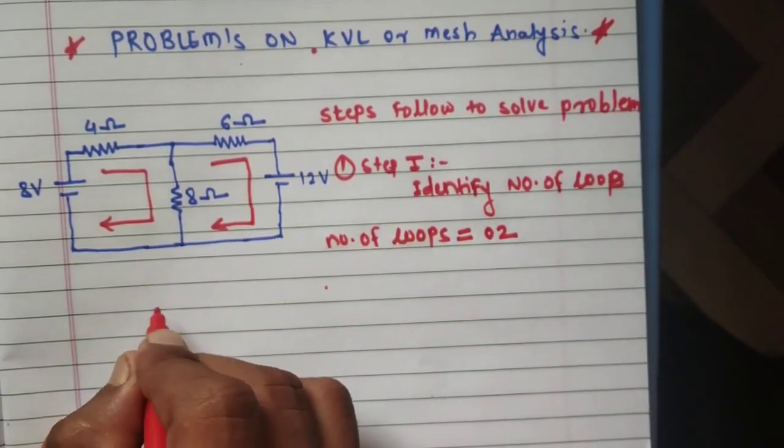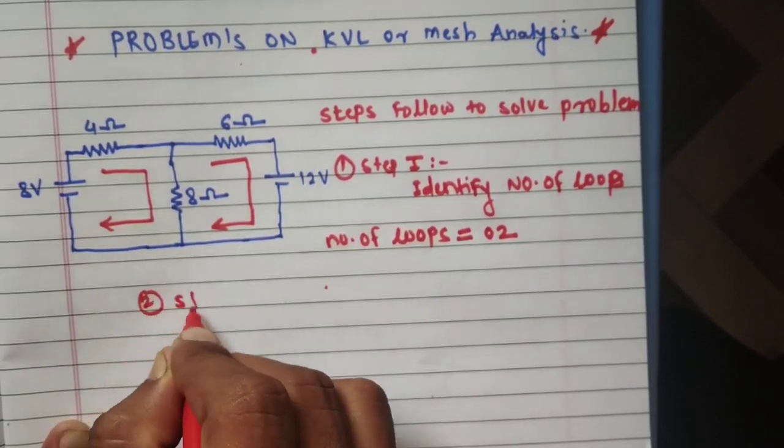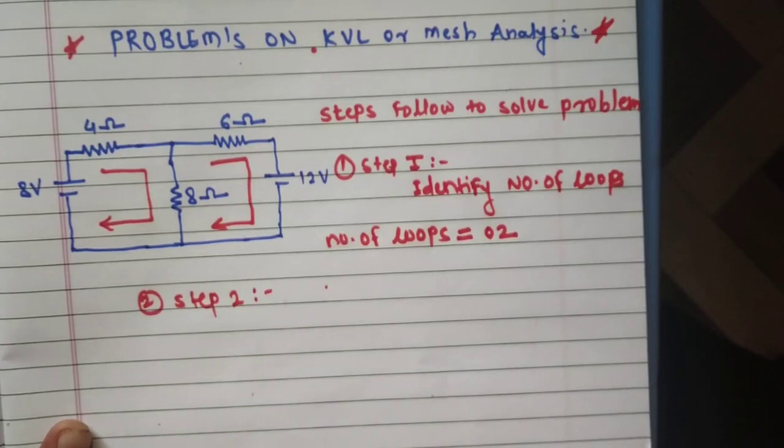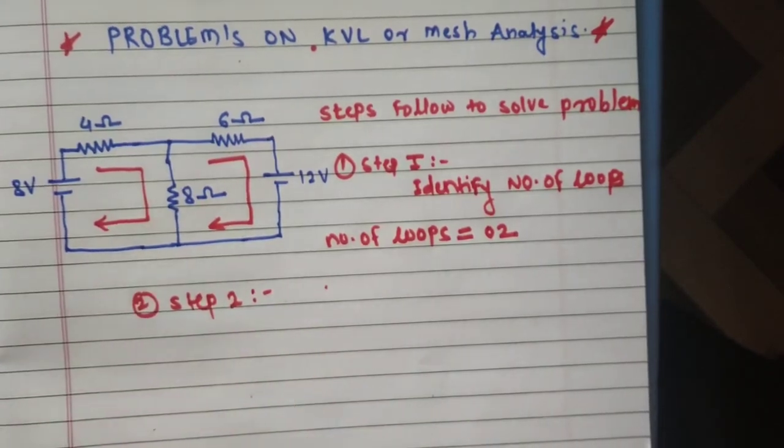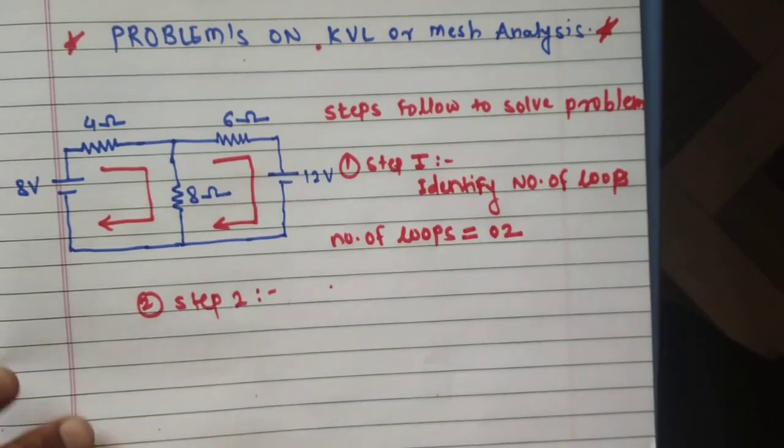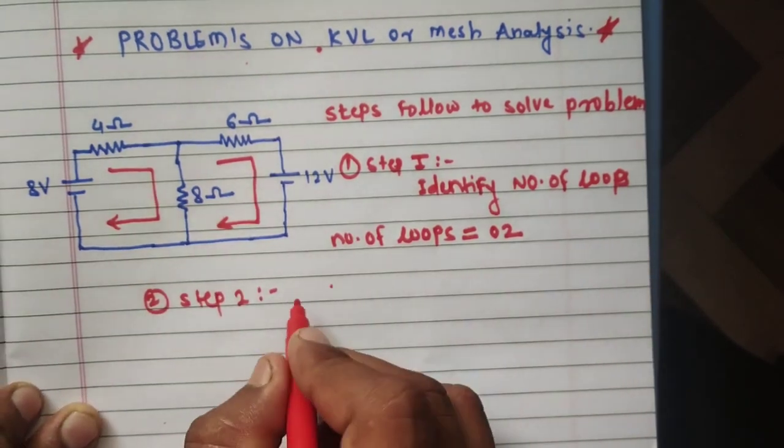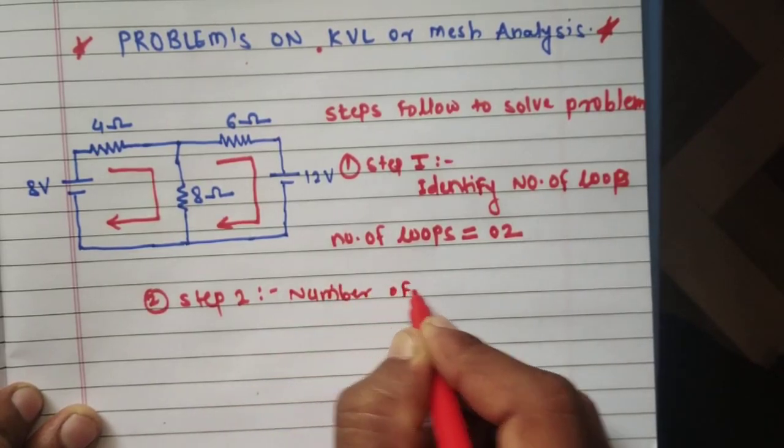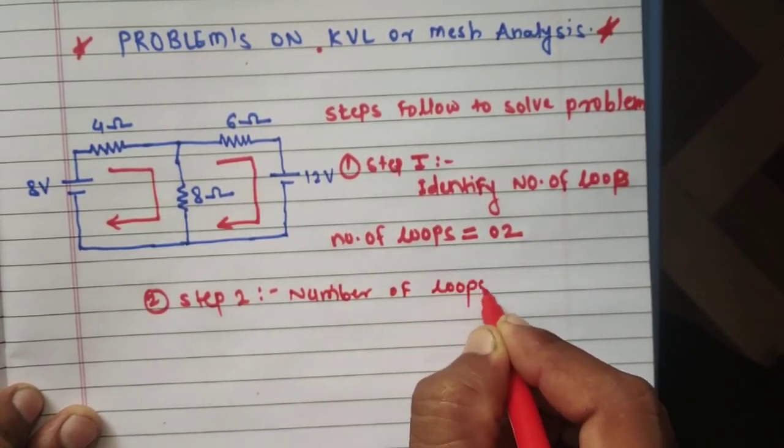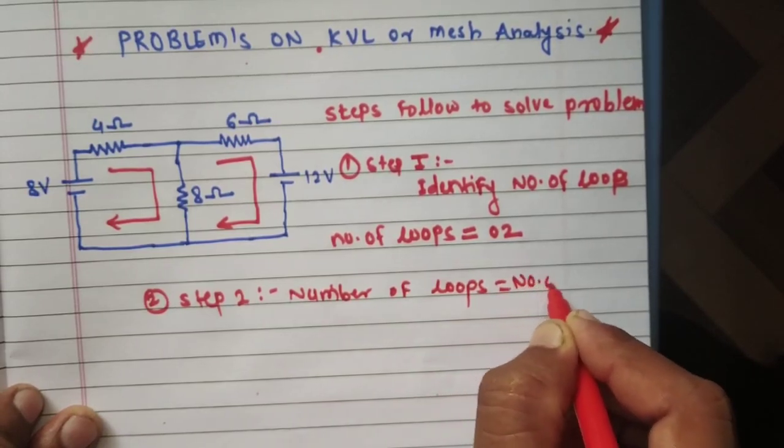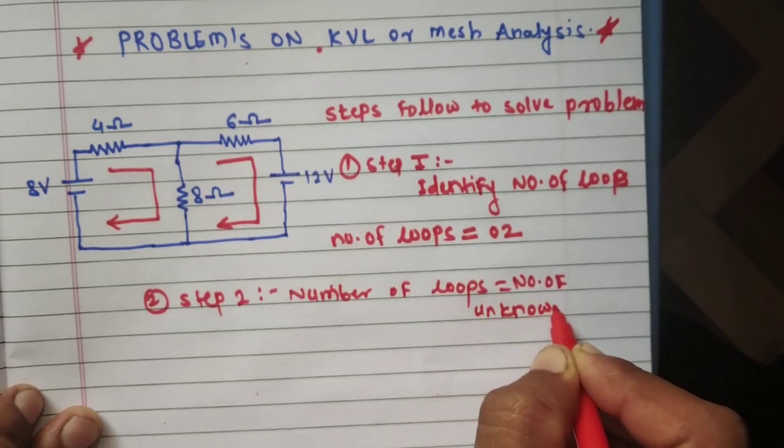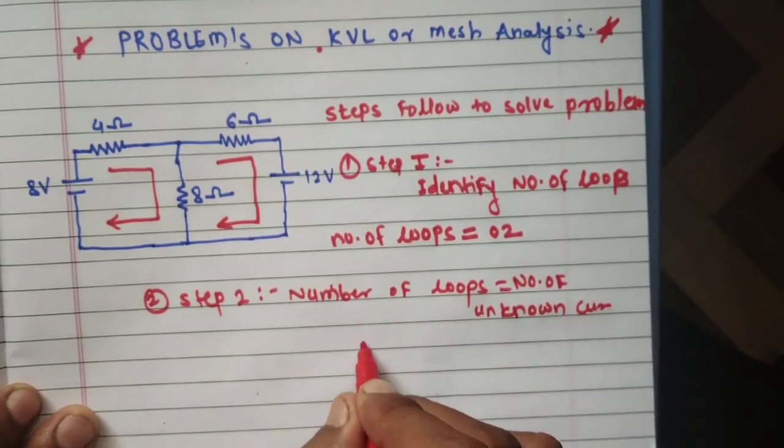Step two is to give respective currents to that loop. The loops have currents. Number of loops is equal to number of unknown currents.